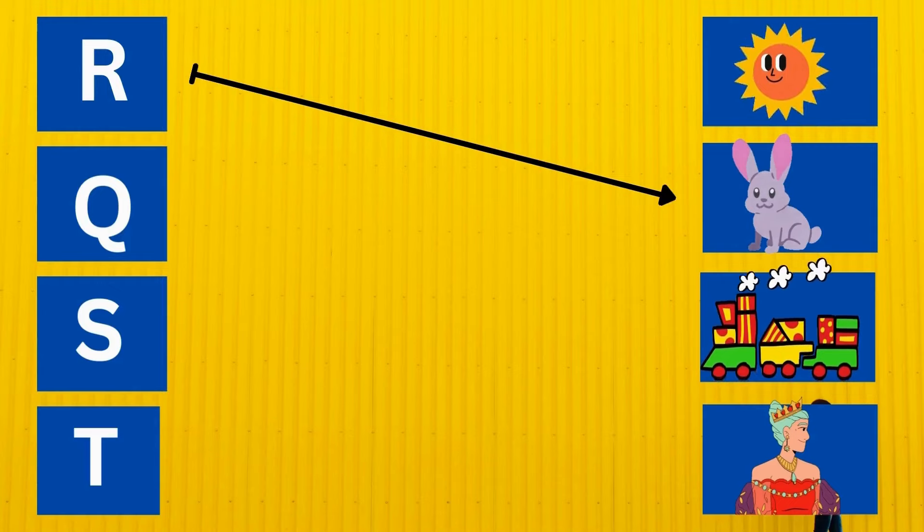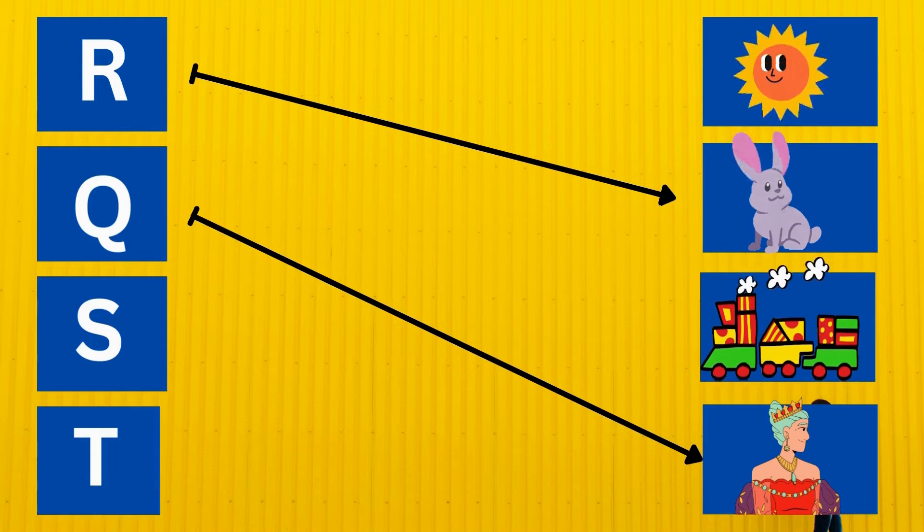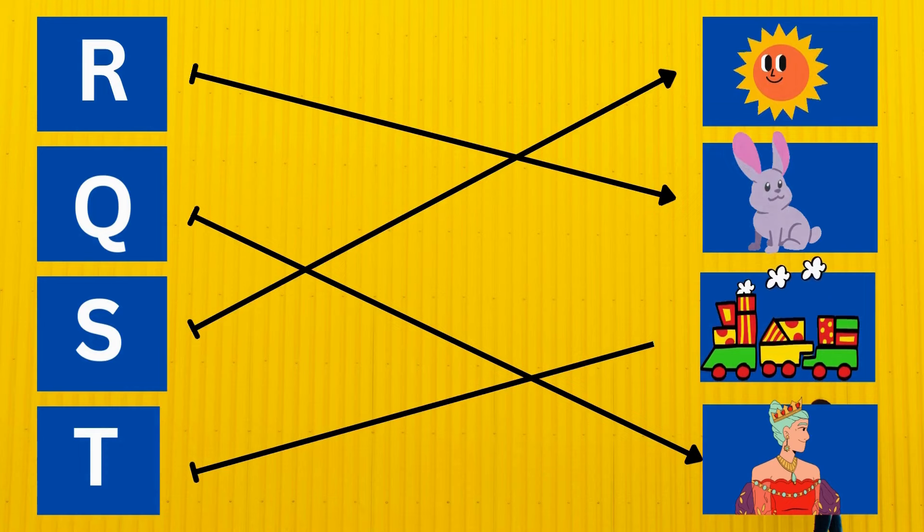R is for rabbit. Q is for queen. S is for sun. T is for train.